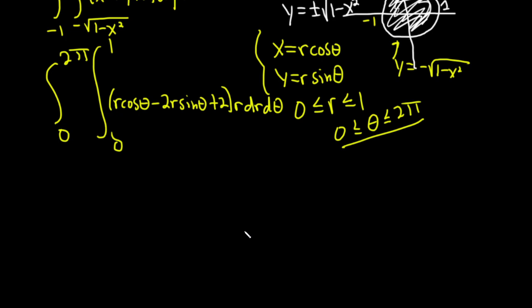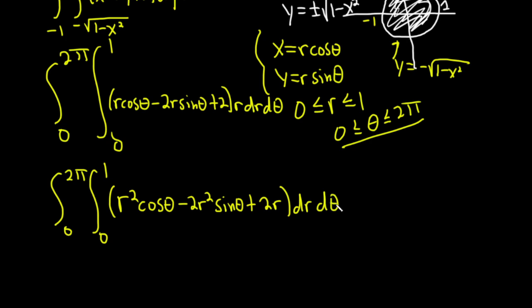Okay, so let's go ahead and distribute this r. I think that might be a really good idea to do. So this will be the integral from 0 to 2 pi, and then 0 to 1. Distributing the r, it's going to be r squared cosine theta, minus 2r squared sine theta, plus 2r, dr d theta. Just took the r and distribute it here, here, and here.